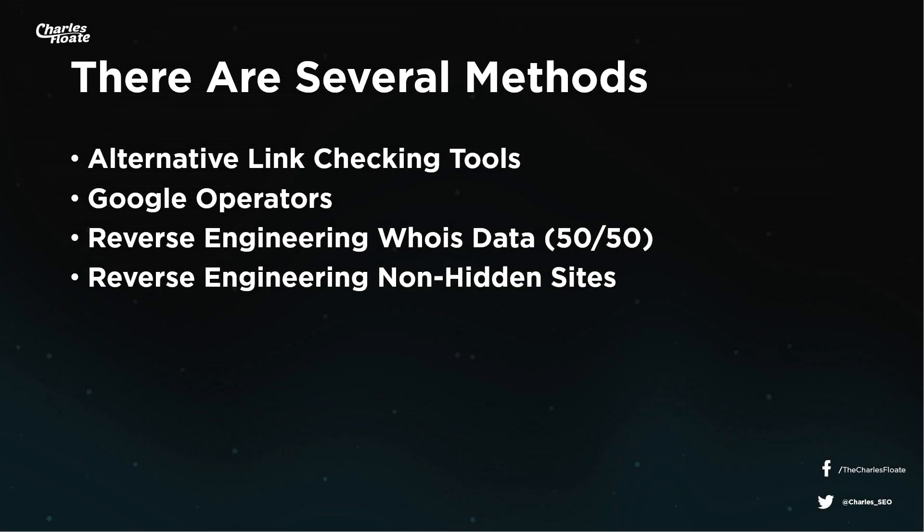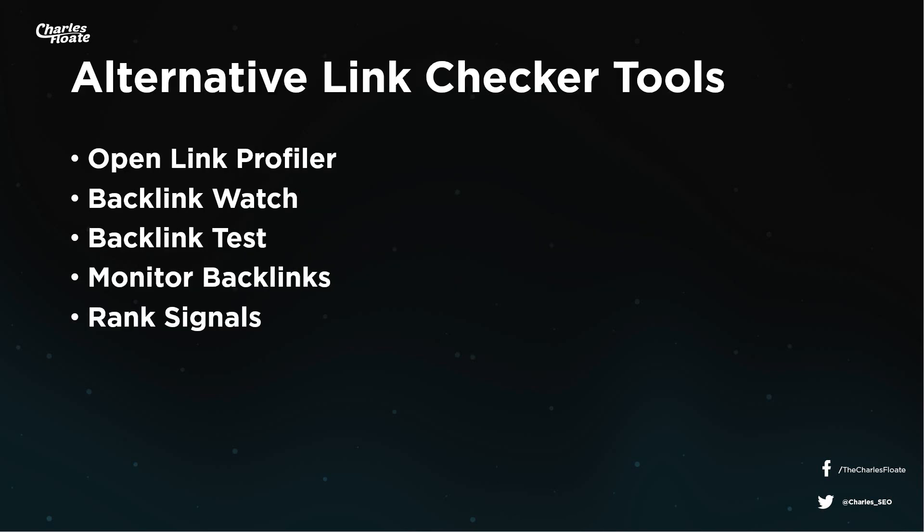There are actually several different types of methods you can use to find hidden backlinks and hidden PBNs. Realistically you're going to want to use at least two or three of them, if not all of them, so you can find the most backlinks possible because some techniques will find some links, some will find others. The first one up is alternative link checkers. I've listed a few here such as Open Link Profile, Backlink Watch, Backlink Test, Monitor Backlinks, and Rank Signals.